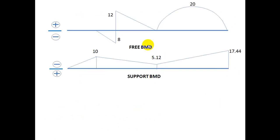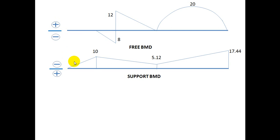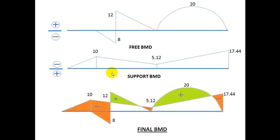Now, next, we are going to overlap the free BMD and the support BMD to get the final bending moment diagram. Just observe these sign conventions — in the free BMD, the positive side is drawn on the upper side, while in the support BMD, the negative side is drawn on the upper side. Because positive and negative are opposite sign conventions, the negative side must be subtracted from the positive side. That is why we draw them this way, and upon overlapping we get the final bending moment diagram.